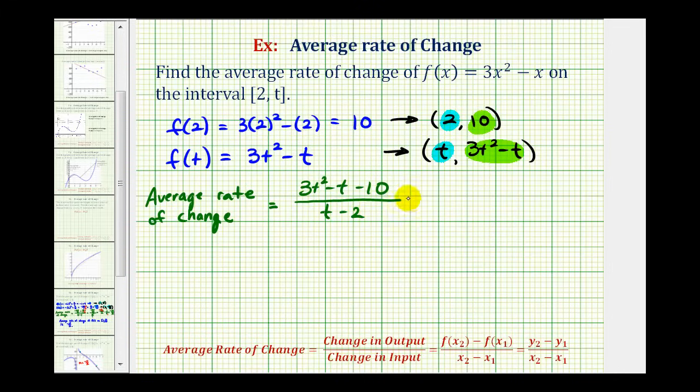We want to try to simplify this. Let's see if we can factor the numerator. If it does factor, it'll factor into two binomial factors. The factors of 3t² would be 3t and t. We want the factors of negative 10 so that the sum of the inner and outer product would be negative 1t.